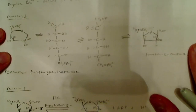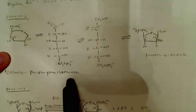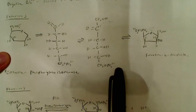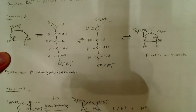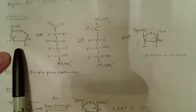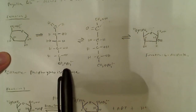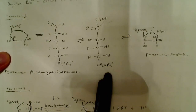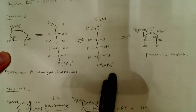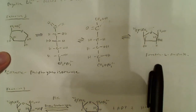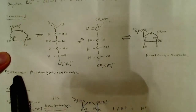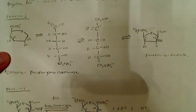Reaction 2 is just an isomerization — not critically important. You're starting with glucose 6-phosphate, which is isomerized to fructose 6-phosphate. The enzyme is phosphoglucoisomerase.